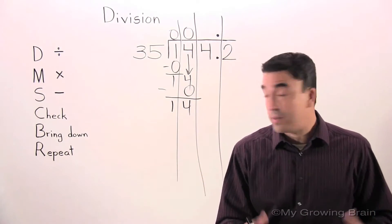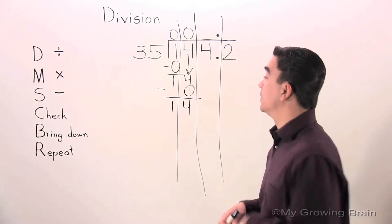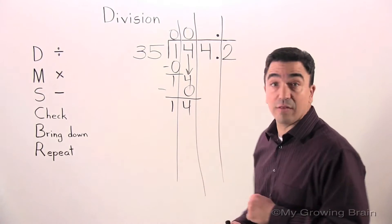Next step: check. 14 is less than 35, keep on going. Next step: bring down. Bring down the 4.